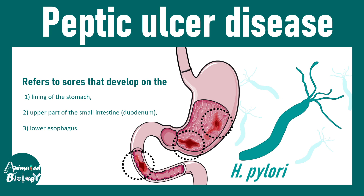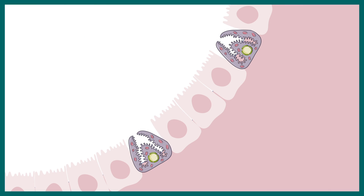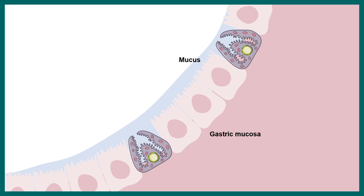H. pylori is a notorious bacteria which can literally kill you slowly. In this video we'll talk about how H. pylori can possibly cause ulcerations. H. pylori gets into the stomach, and generally every bacteria dies in the stomach because of the harsh gastric HCl. There is a mucous layer, and on top of it a protective gastric HCl layer, which generally kills off bacteria and pathogens entering the GI tract. But H. pylori is different.